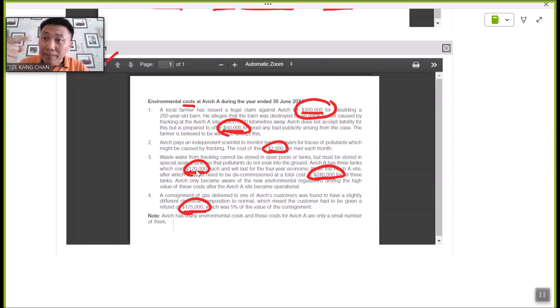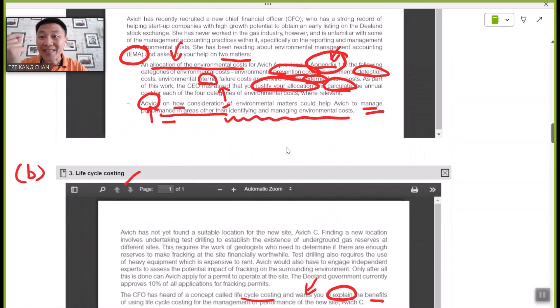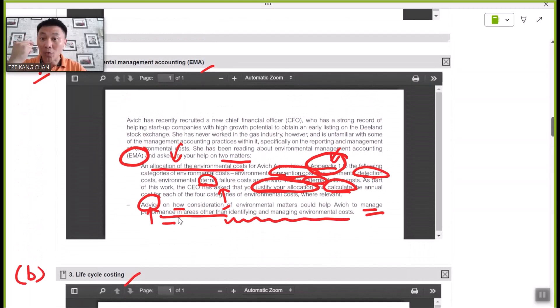A simple mathematics of adding up the cost in each of the four headings will be able to answer the first task in part A. And of course, not to mention what I have mentioned earlier about the answer planning in responding to the advice to be given out in a broader aspect of applications of EMA other than cost classification.